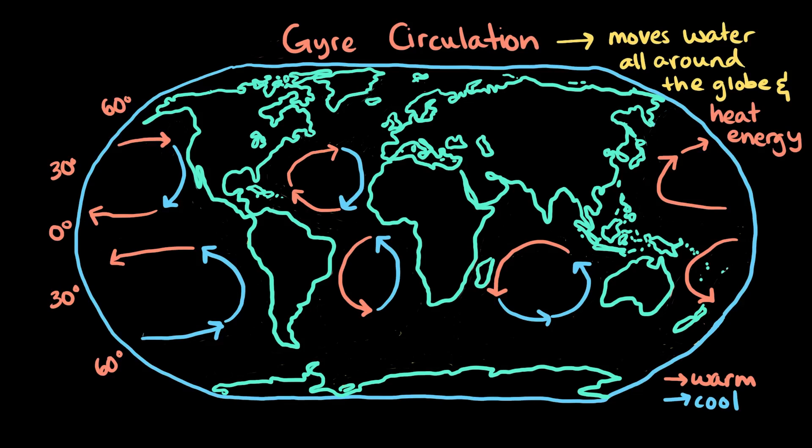Water is pretty good at holding onto heat it absorbs from the sun. So, as the water in our oceans moves around the world through this gyre circulation, the water also carries heat. Here, warm water generally moves from the equator to the poles, and cold water moves from the poles to the equator.